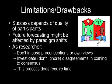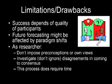Here are a couple of examples of limitations and drawbacks to this method. One, the success depends on the quality of the participants — you have to choose carefully and try to choose participants that cover a wide range of expert fields, as you'll notice in one of the examples where they chose from different fields. Also, future forecasting might be affected by paradigm shifts — there are times when a paradigm shift might totally affect the ideas you've forecasted.